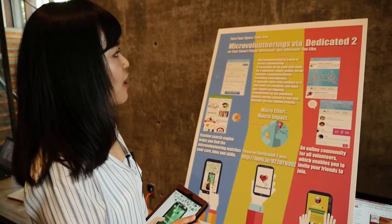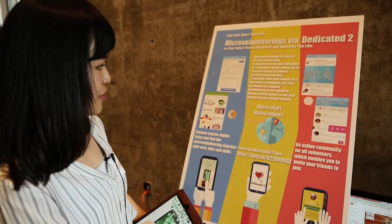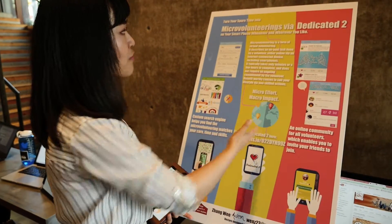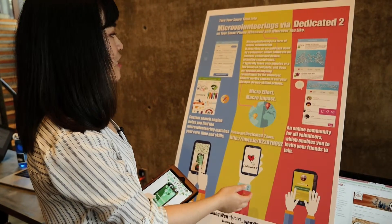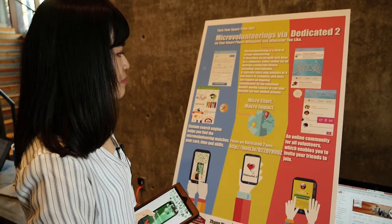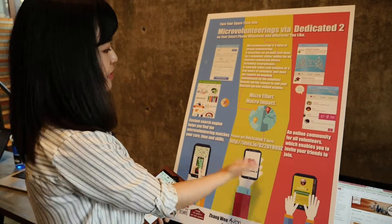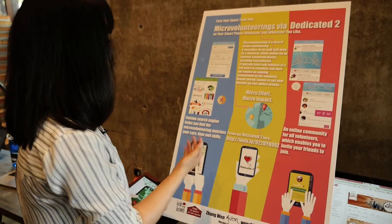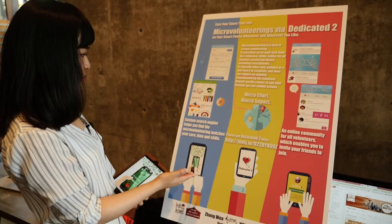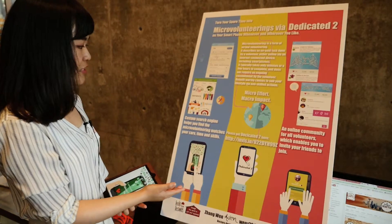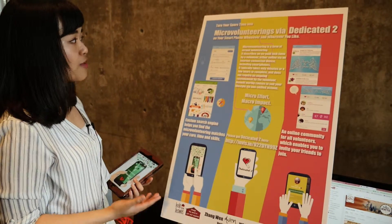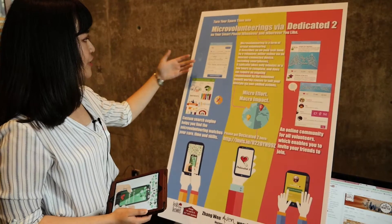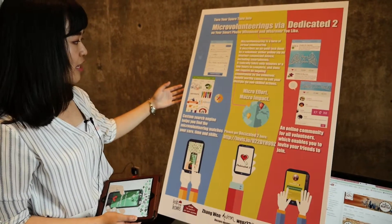And this is the poster of Dedicated To. And this part introduces you what is micro-volunteering. It says micro-effort and macro-impact. And you can get this mock-up from the link. And this shows you the custom search engine helps you to find micro-volunteering that matches your account, time and skills. So that's the interface design I designed for my app.